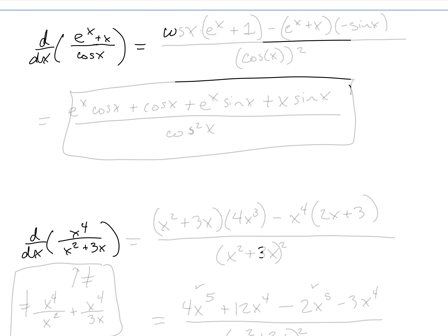So it's low, cos(x), d high — the derivative of e^x is just itself, plus the derivative of x is 1 — minus high, that's e^x + x, d low — the derivative of cos(x) is negative sin(x) — all divided by the bottom squared, that's cos²(x).